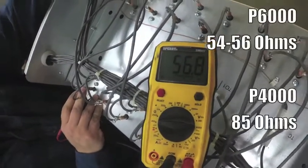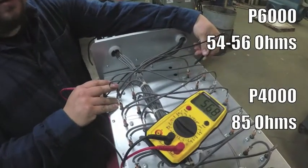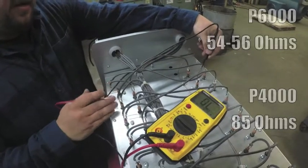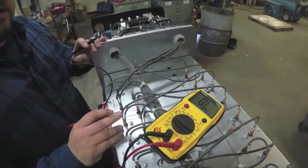Generally, you're going to be around in the 54 to 56 range ohms for a P6000. P4000s, you will see 85 ohms. This applies to every coil in this unit. Remember that you do need to test each coil individually.